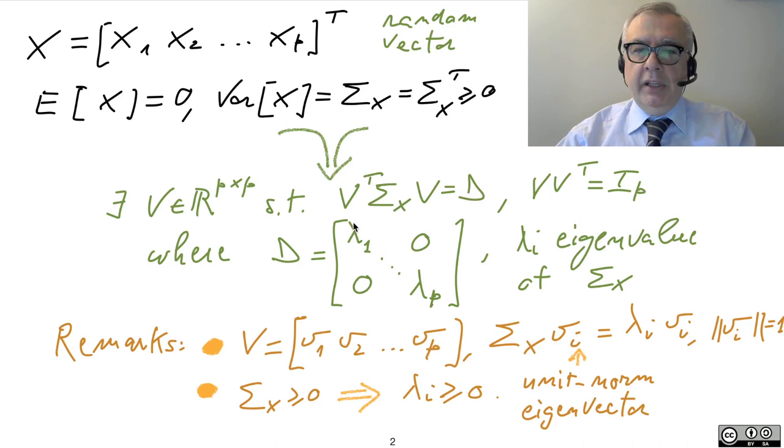Here, you find a diagonal matrix. And the elements, the entries in its diagonal, on its diagonal, are just the eigenvalues of sigma X. How can you find the transformation matrix? Well, the transformation matrix is given just by the matrix of the eigenvectors. So you are finding the eigenvectors of sigma X.